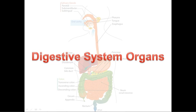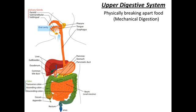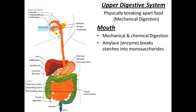Let's get started. Here is our overall diagram, and the first thing we're going to be looking at is the upper digestive system. The main functions there include physically breaking apart the food — mechanical digestion, as we discussed in the previous podcast. That begins with the mouth, where much mechanical digestion takes place and food is physically broken apart. We also have an enzyme called amylase, which begins to break starch down into monosaccharides.